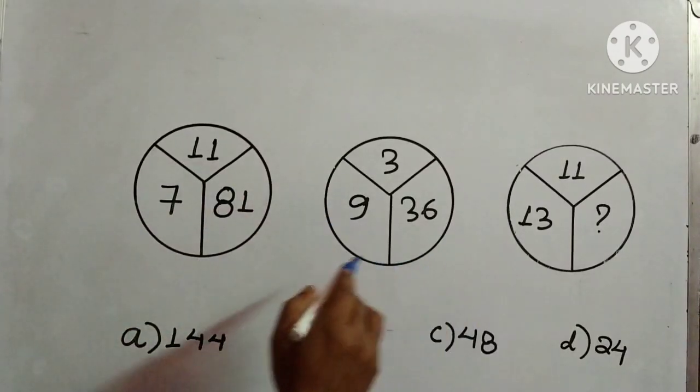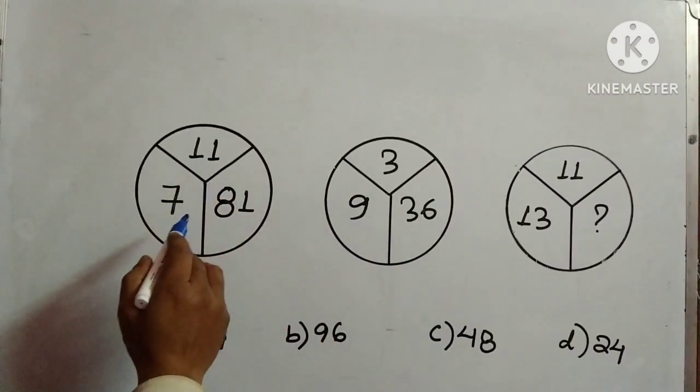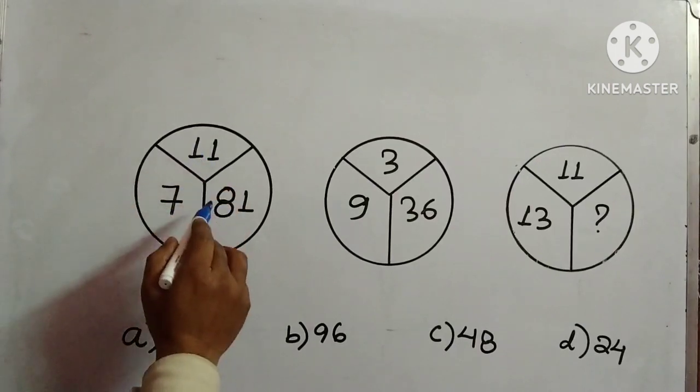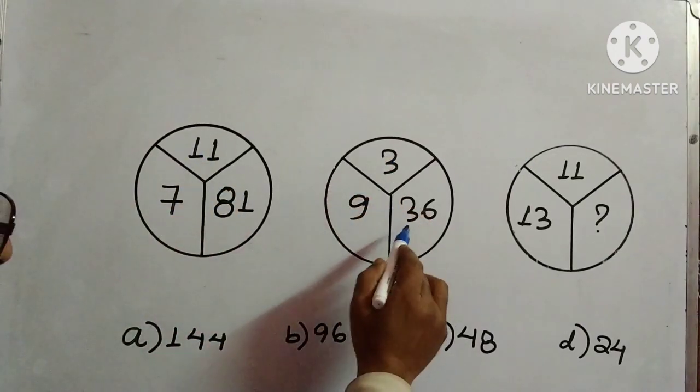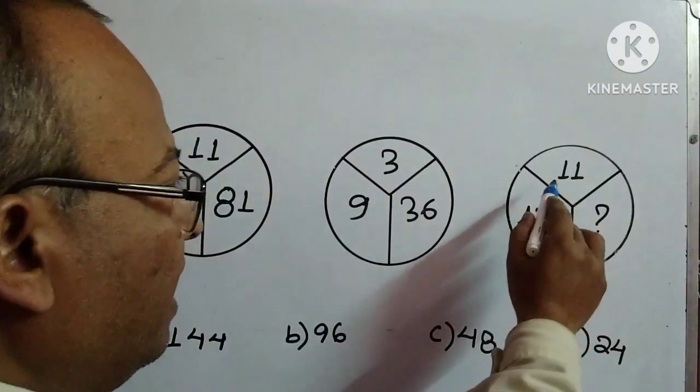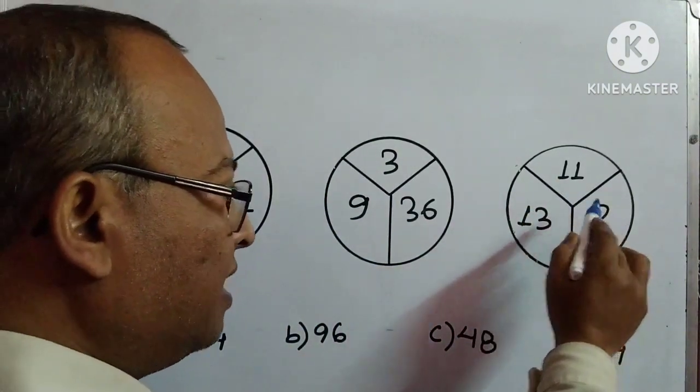In this question, we have three figures given. In the first figure, 7, 11, 81 is there. In the second figure, 9, 3, 36 given. And in the third figure, 13, 11, and we need to find out this number.